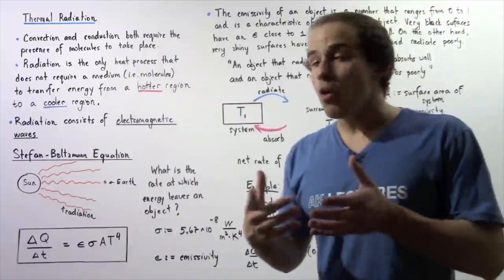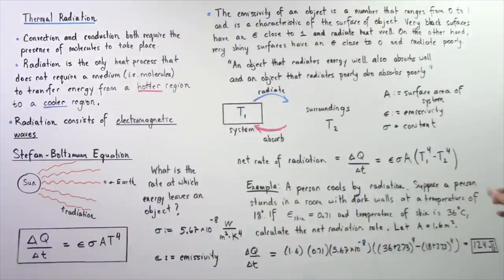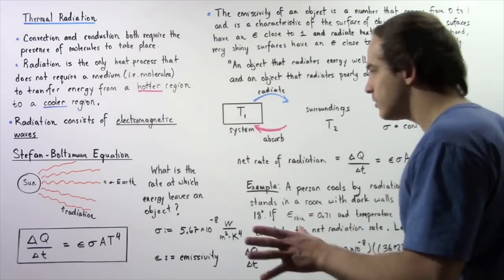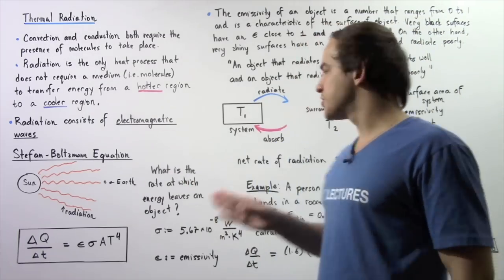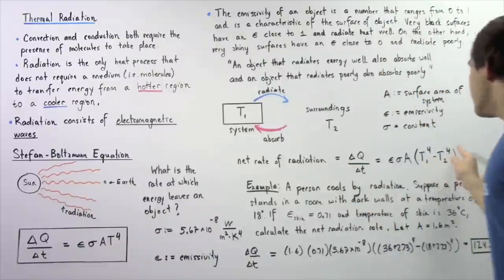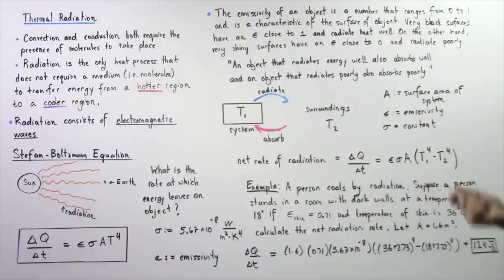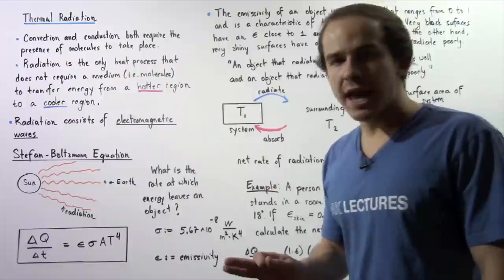When T1 equals T2 — when the system is in thermal equilibrium with the surroundings — the difference T1⁴ − T2⁴ goes to zero, and no net rate of radiation takes place.